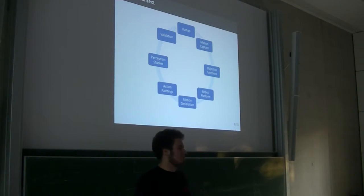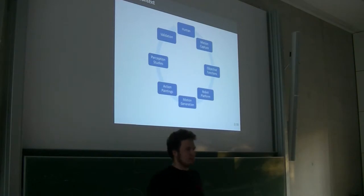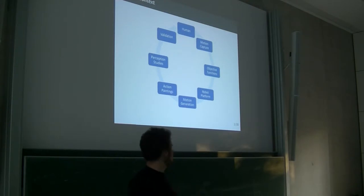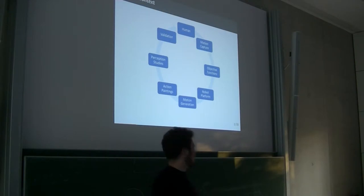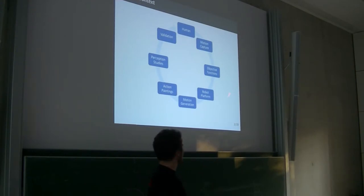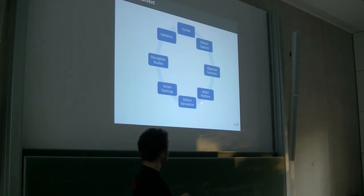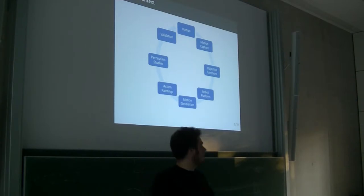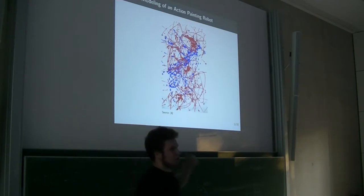From the motion capture data, we can calculate some objective functions by which he was moving — for example, he was trying to maximize the jerk, which is the first derivative of acceleration, or to minimize energy. We can implement a robot platform that generates motions with these objective functions. If we have these motions, we can get the robot platform to paint action paintings, which we then give people to see how they react to these paintings — to see if the motion primitives, which are the objective functions, have any impact on how the paintings are perceived.